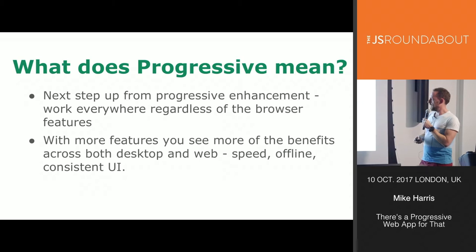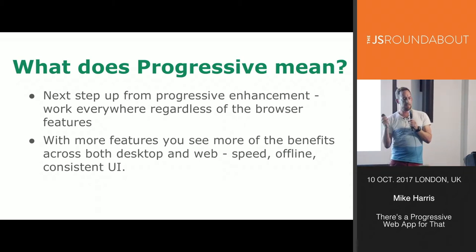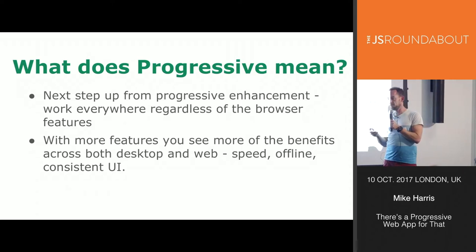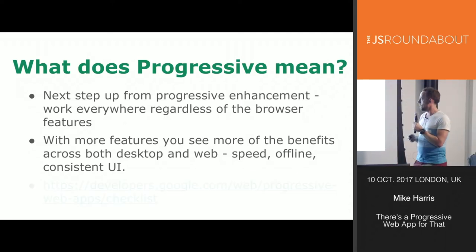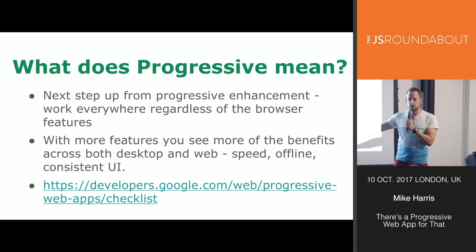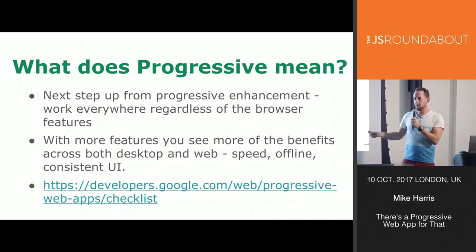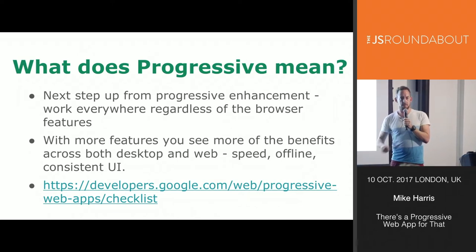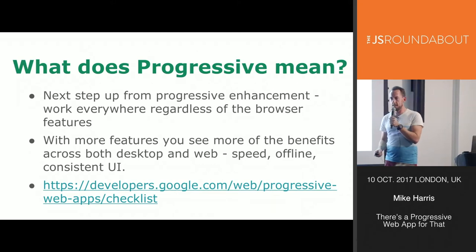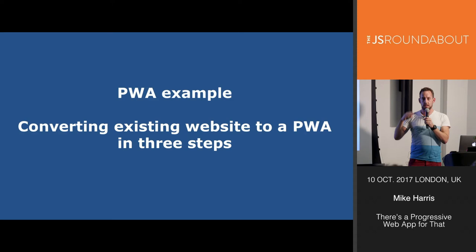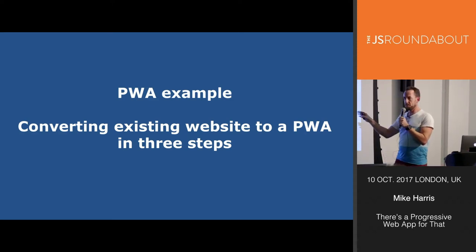With more features you see benefits across desktop and web — and I keep comparing to native apps, but a lot of these performance improvements apply to websites too. If you have a website and don't care so much about mobile, these technologies can really improve your site's performance. There's a link with all 11 things Google lists. I'm going to talk about a couple through a little example. Some of them are as simple as having HTTPS on your site.